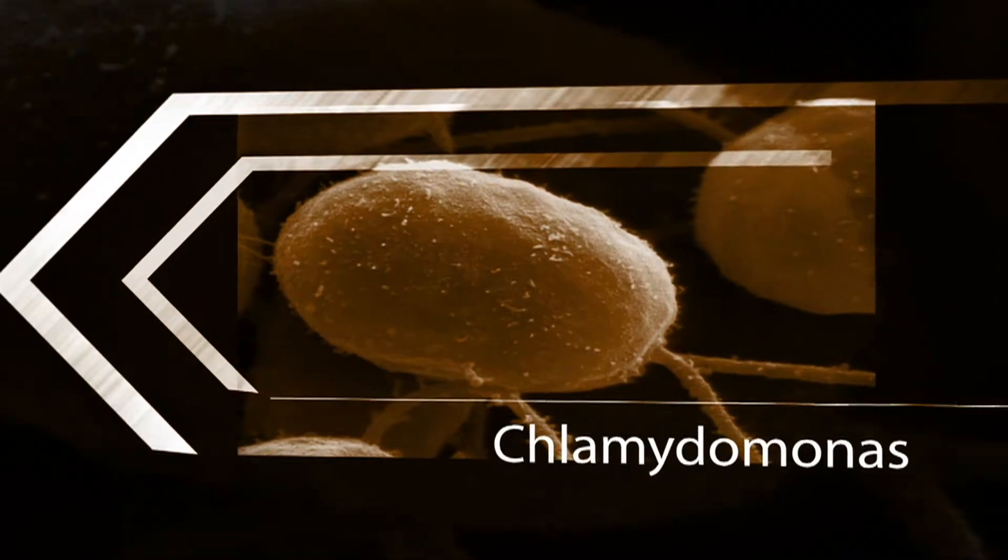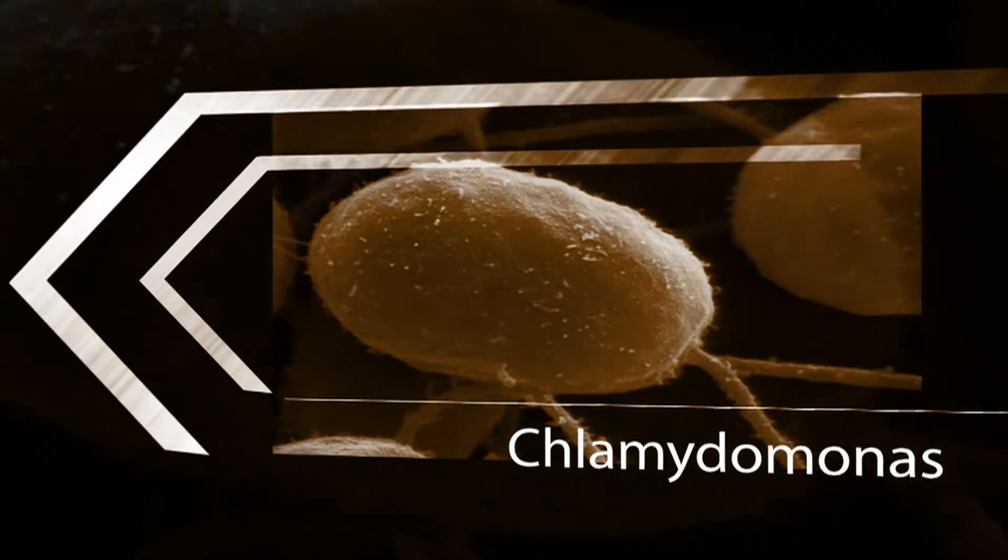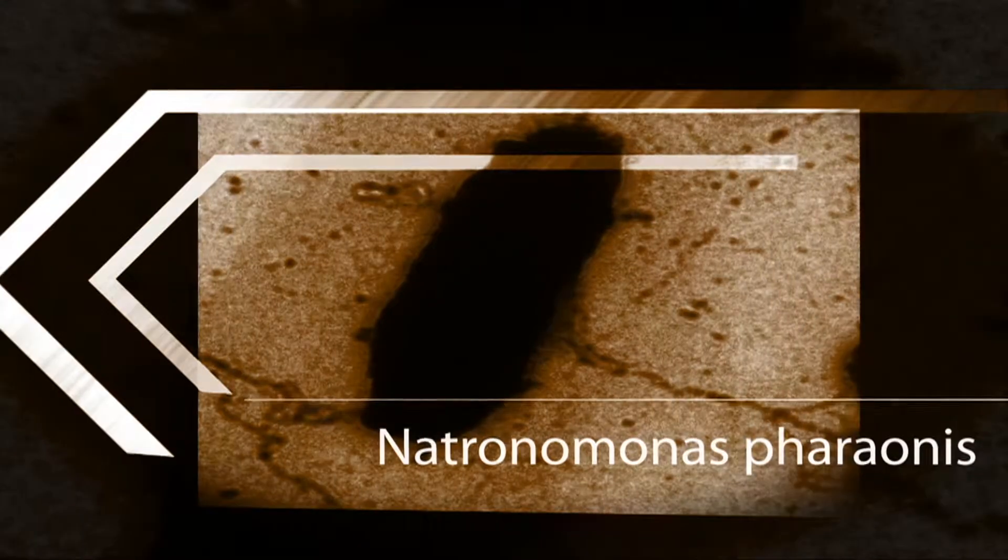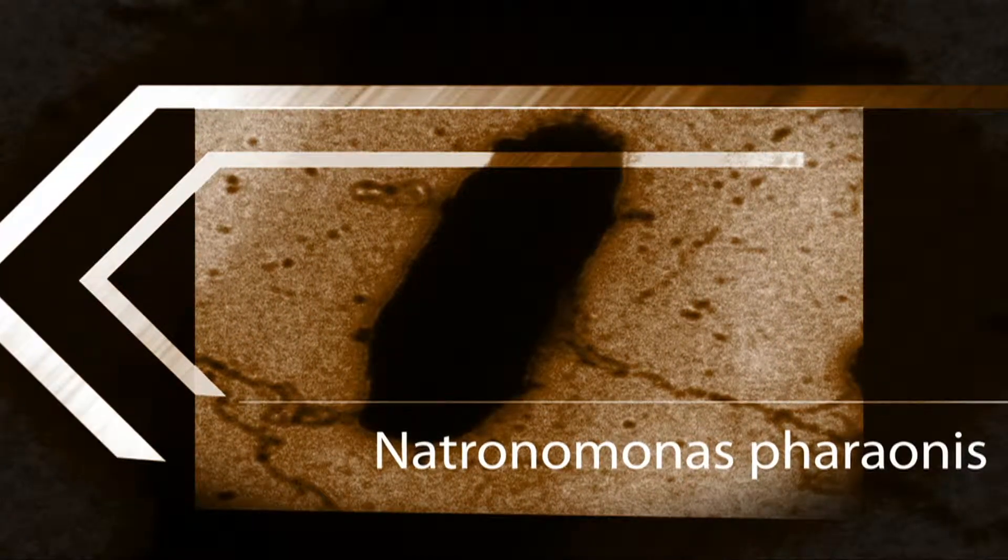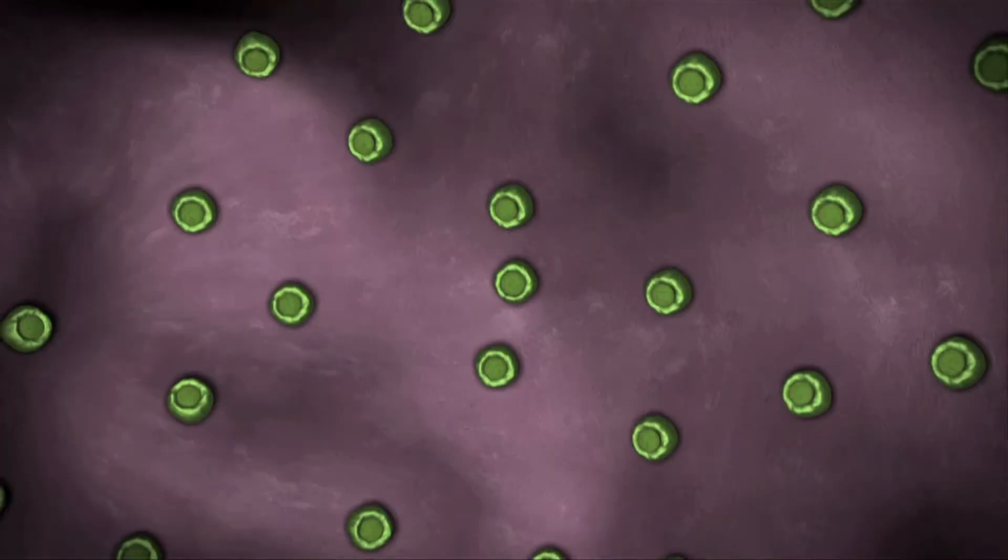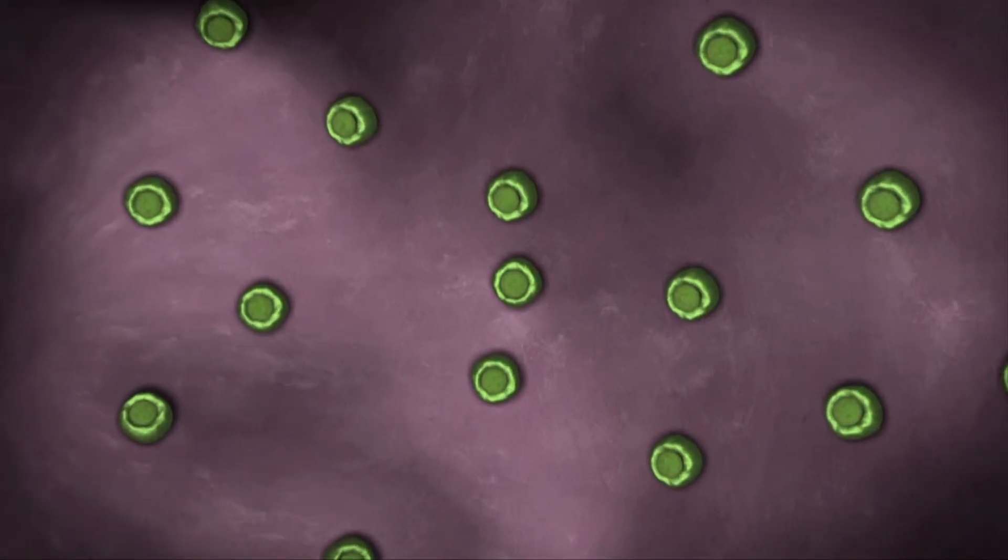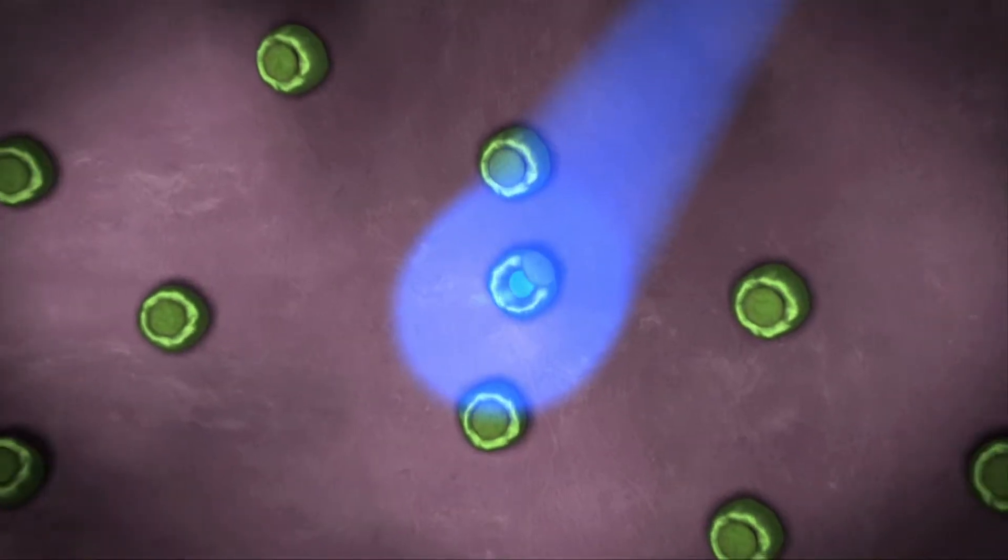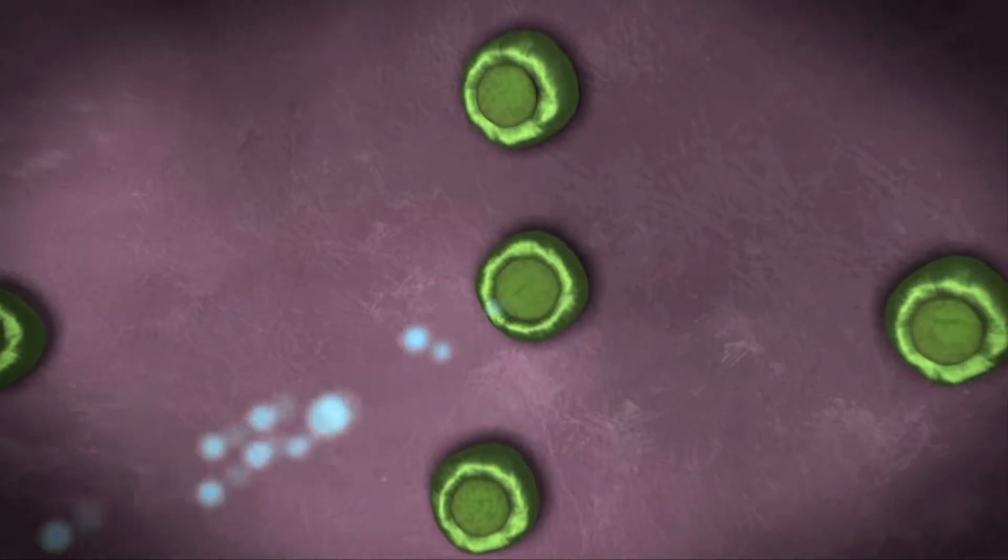The Chlamydomonas algae, found in ponds and lakes the world over, and Neutronomonas furonus, a microbe found in remote, super salty, Saharan lakes. The algae have a light sensitive protein that, when exposed to light, steers the algae towards the light so it can feed through photosynthesis.